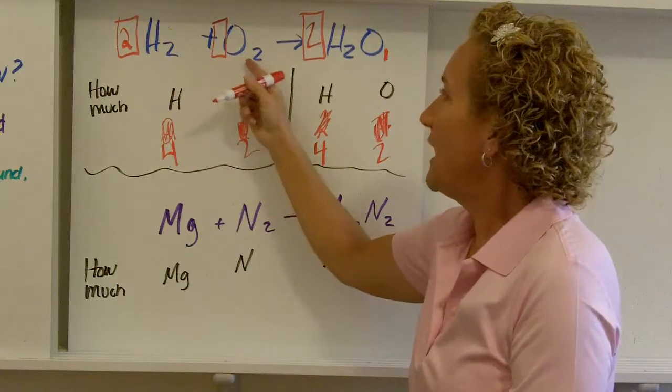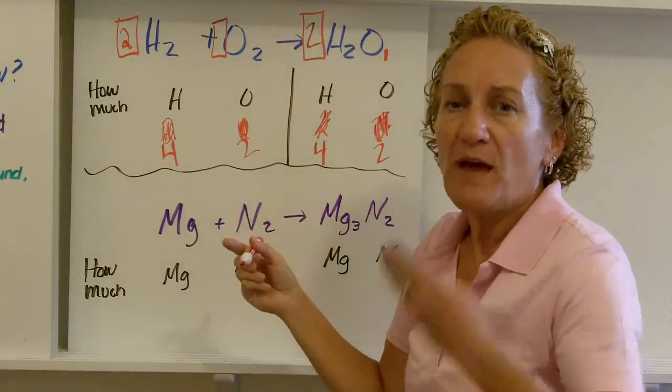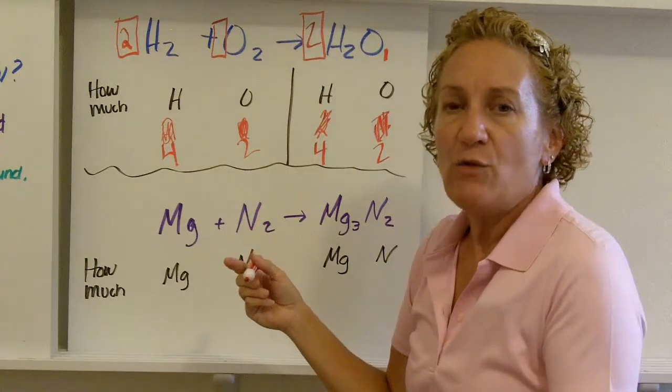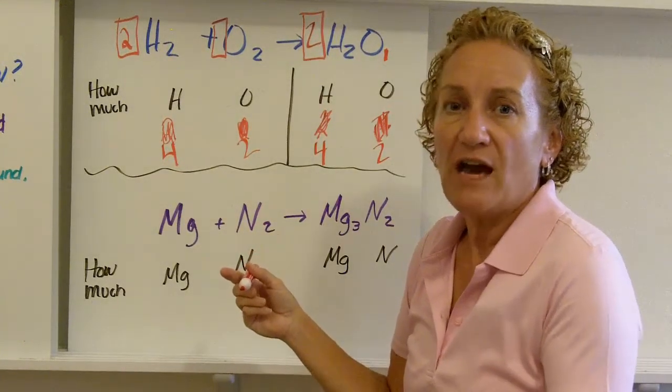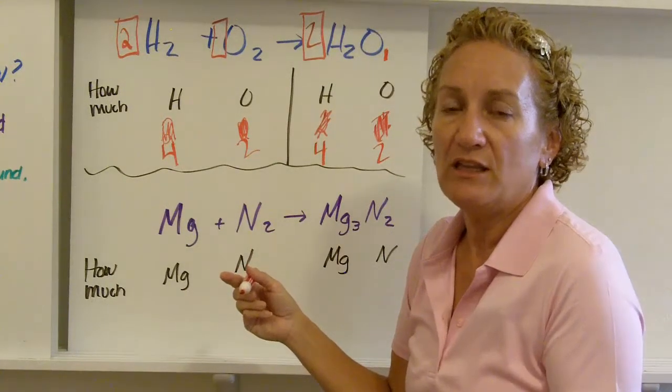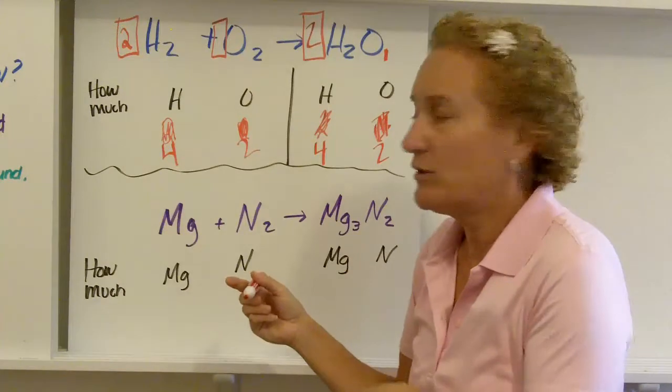Two H2 plus one O2 reacts to form two waters. You have to keep going back again and again. If you want a lot of practice on balancing chemical equations, watch the video on how to balance chemical equations, a quick and easy method. There's actually part one and part two. So start with part one and then go on to part two.